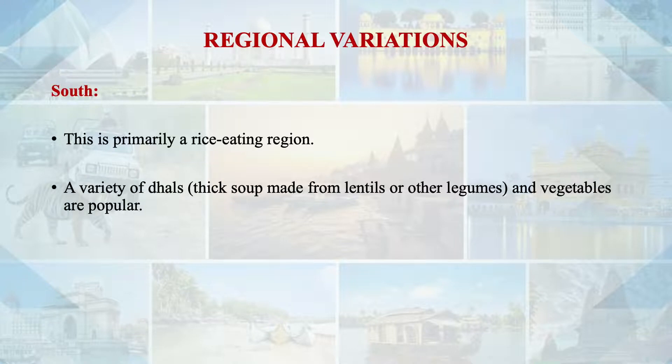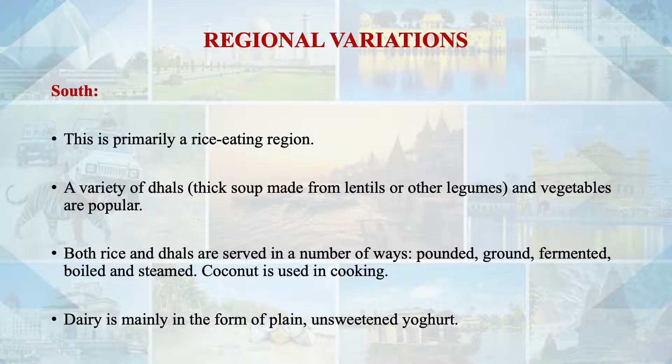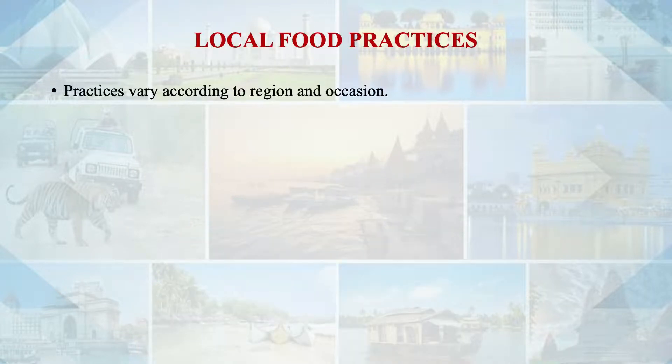Dal and rice are served in a number of ways — they may be pounded, ground, fermented, boiled or steamed. Coconut is used in cooking and dairy is also an important part. After understanding the differences between Northern and Southern styles, let us understand local food practices. These local food practices are related with religious festivals, celebrations and events at home. They vary according to the region and occasions. For example, in India there may be many variants of biryani, common among all festival menus.